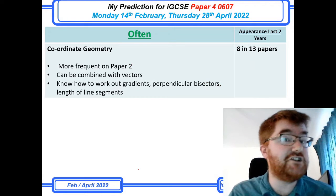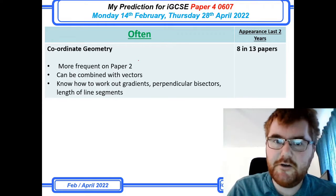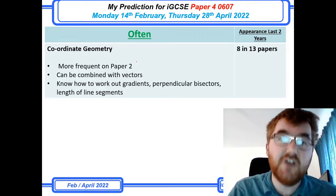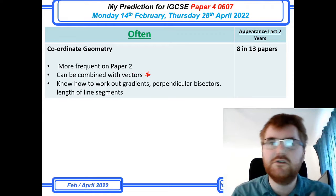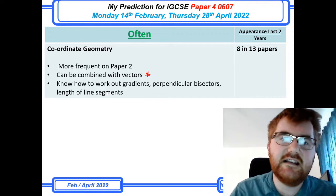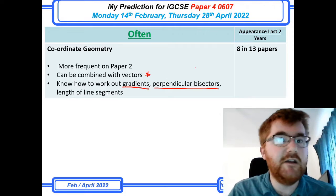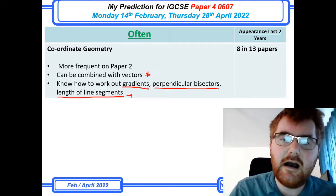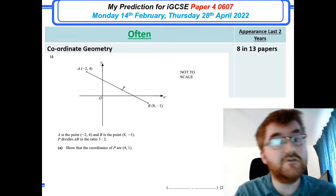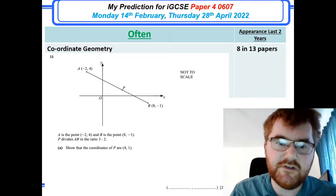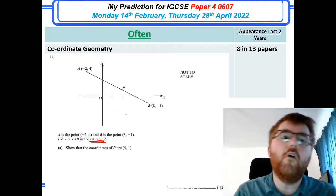On to the often topics. The first one is coordinate geometry, which has always been a favourite on 0607. This is generally more frequent on paper 2, like a perpendicular bisector question, but has appeared reasonably often on paper 4 as well. A couple of times it's been combined with vectors, giving you vector information to work out coordinates and gradients. Key things to know: work out gradient, perpendicular bisectors, and length of line segments using Pythagoras. A typical question asks you to work out coordinates of a point using the ratio of lines.